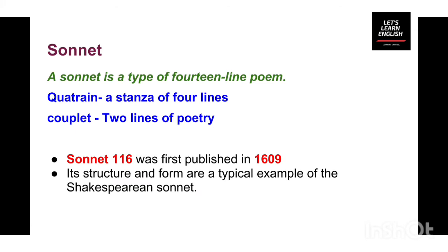A sonnet is a poem of 14 lines. There is a particular division: three quatrains and a couplet. A quatrain is a stanza of four lines, and a couplet is two lines of poetry. Sonnet 116 was written in 1590 but published in 1609. Its structure and form is a typical example of a Shakespearean sonnet.